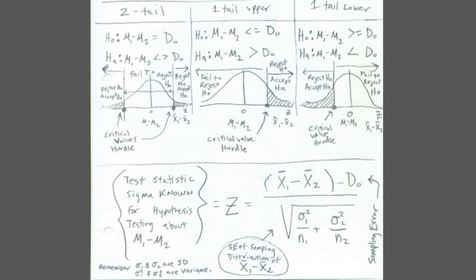Let's look at how we set this up slightly differently than last chapter. The null hypothesis is set up as a subtraction: mu sub 1 minus mu sub 2 less than or equal to the hypothesized difference. The alternative would be H sub A: the difference between the two population means greater than the hypothesized difference. It's very important to get the order of whatever population and sample you set up as the first one and the second one correct throughout all of the calculations.